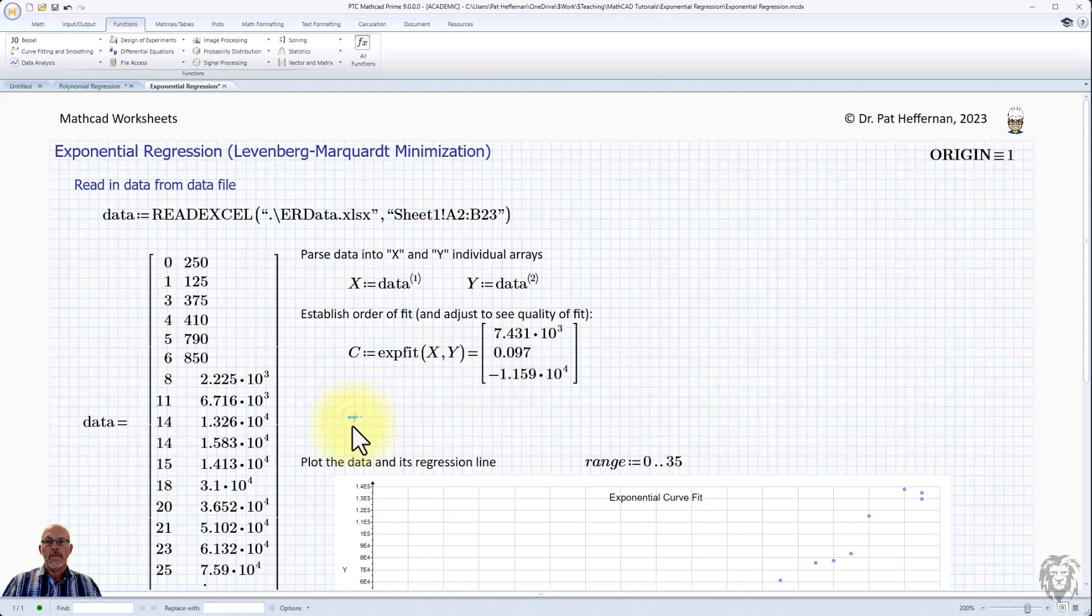Now I'm able to just create a function for that fit. I'm going to call it curve and make it a function of X. It is equal to our first coefficient, using the index C1, and that's multiplied by E all to the power of C2 using the index again.